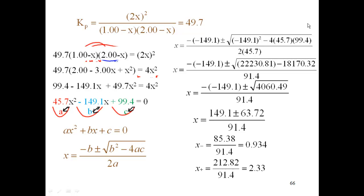If I do that, by doing a subtraction one, I get 85.38 divided by 91.4, which is 0.934. If I do the addition, I got 212.82 divided by 91.4, which is 2.33. So I have two answers. Well, the question is now, which one of these makes sense?